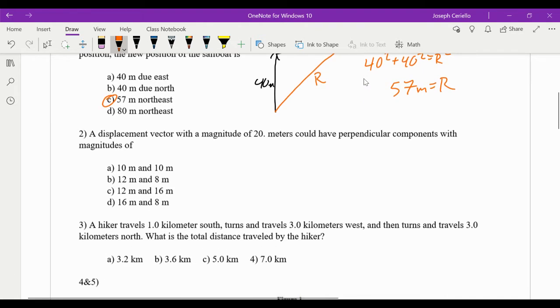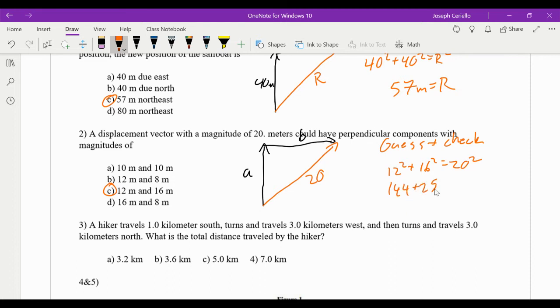2 says the displacement vector with a magnitude of 20 meters could have perpendicular components with magnitudes of, well, this is actually a guess and check problem. So perpendicular components, we'll call that a, and we'll call this b. The resultant from the tail of a to the tip of b is 20. So this is a guess and check problem. What do we mean by that? Well, we just have to start plugging these in and see which ones work. Now, just to save you some time, I will tell you it ends up being choice c, but I would try the other ones just to make sure they check.